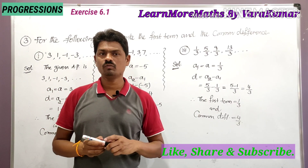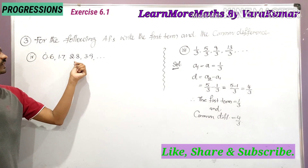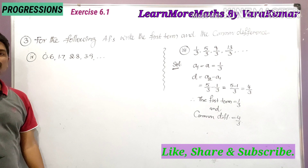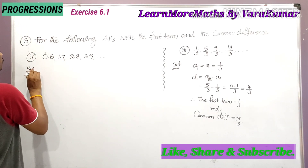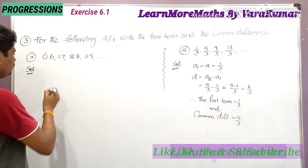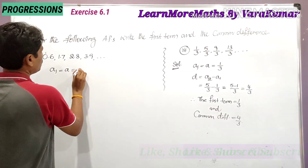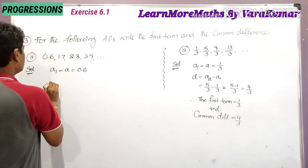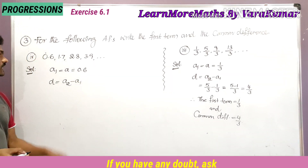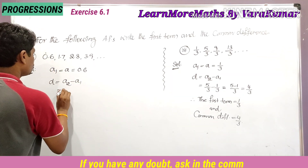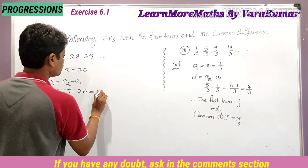This is the fourth part: 0.6, 1.7, 2.8, 3.9, and so on. He has given this AP and you have to find the first term and the common difference. The first term is a₁, which is 0.6. The common difference d is equal to a₂ minus a₁, where a₂ is 1.7 and a₁ is 0.6.